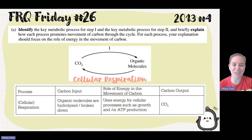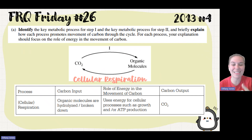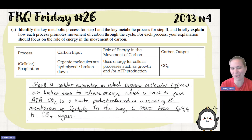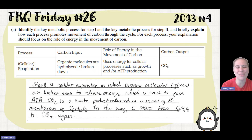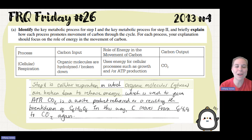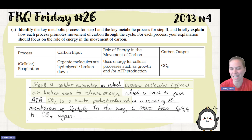Organic molecules are hydrolyzed and broken down. We use the energy of these different processes to synthesize ATP, and then we have a carbon output. Step two is cellular respiration, in which organic molecules like glucose are broken down to release energy used to form ATP. Carbon dioxide is a waste product released as a result of the breakdown of C6H12O6. In this way, carbon moves from C6H12O6 to CO2 again.